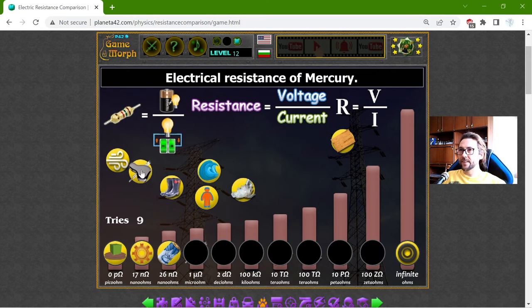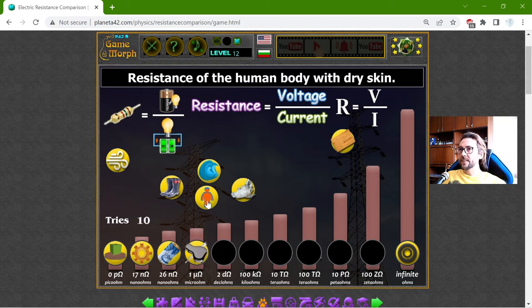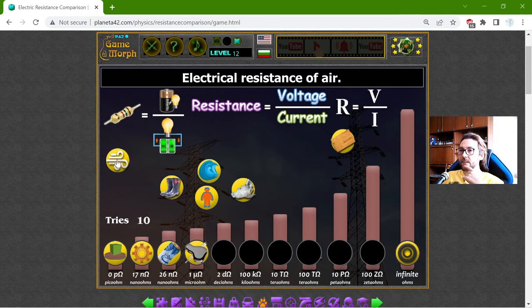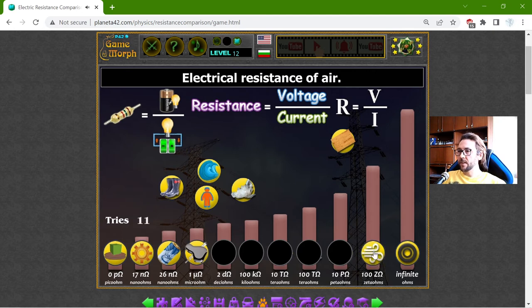There is a hint. This is the electrical resistance of the mercury. It has good conductance. And I think the wind should have a lot of resistance. So, maybe here, yes.